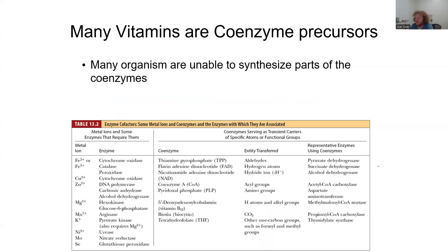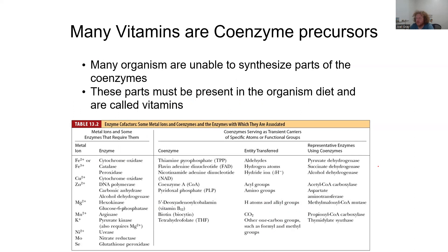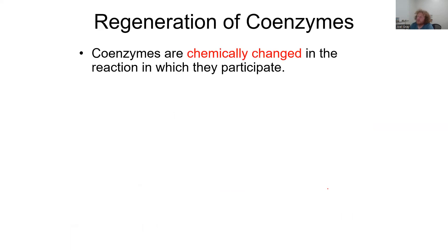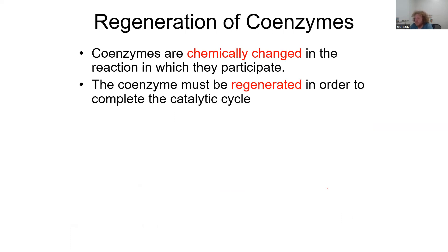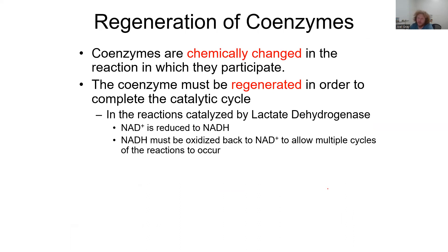Many vitamins are coenzymes, and many organisms cannot synthesize parts of coenzymes — those parts must come from diet and are called vitamins. Examples include FAD, NAD, coenzyme A, PLP, and B12, all involved in fatty acid synthesis or degradation. Coenzymes are chemically changed in the reaction in which they participate, so they must be regenerated to complete the catalytic cycle.